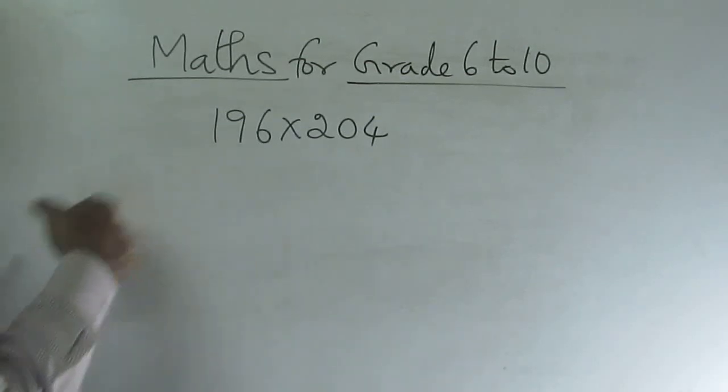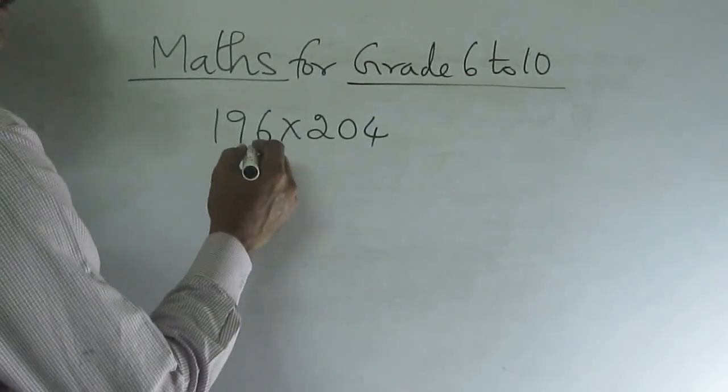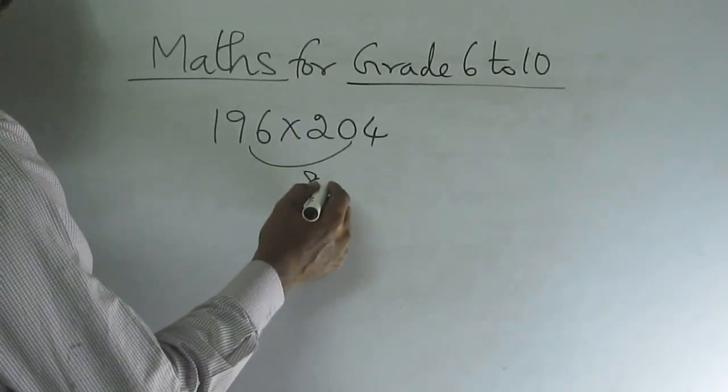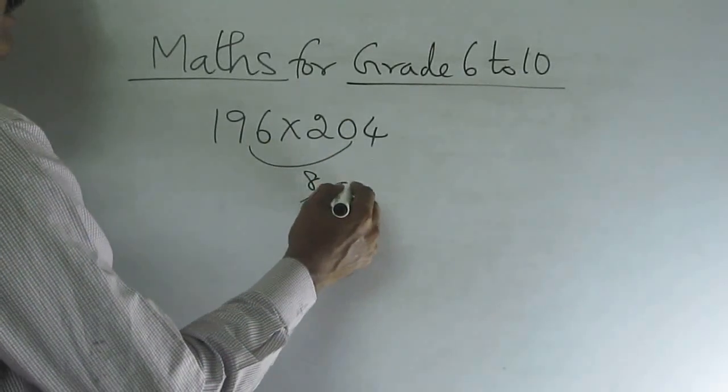How to do this is, just check what is the gap between these numbers. What is 204 minus 196? 8. Now divide this gap by 2. What is 8 divided by 2? 4.